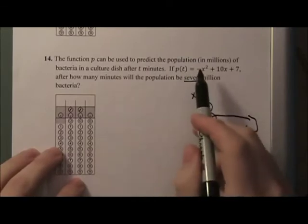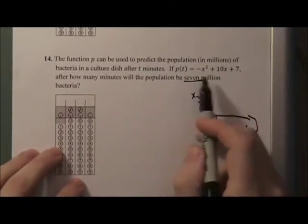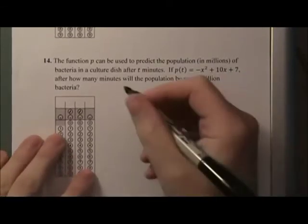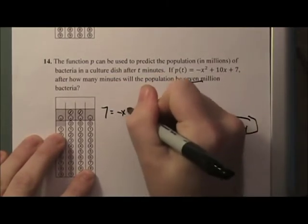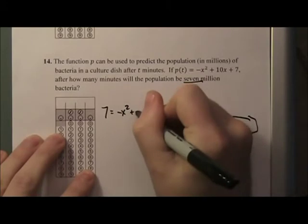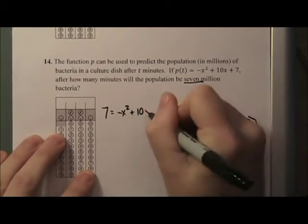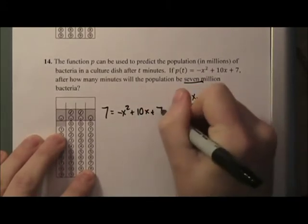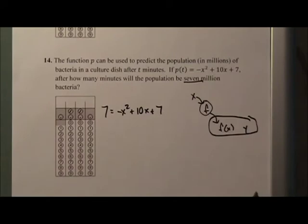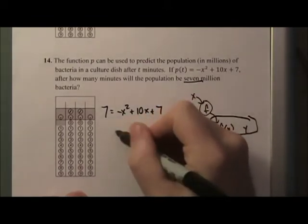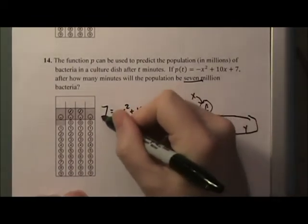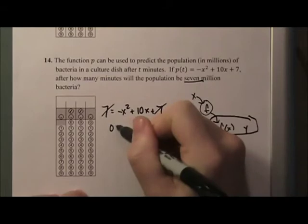It's really simple. So here it says it's in millions and looking for 7 million, so we're going to set this entire function equal to 7. So 7 equals negative x squared plus 10x plus 7. And that's not fairly difficult. So the first thing is we're going to simplify, so we can bring this 7 over, the sevens drop out. So we have 0 equals negative x squared plus 10x.